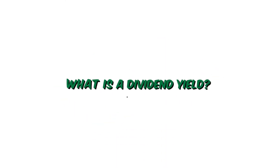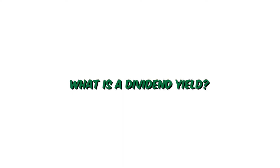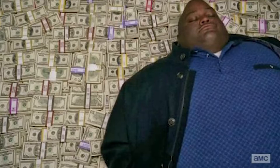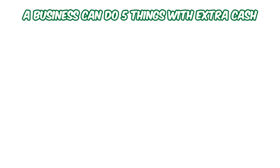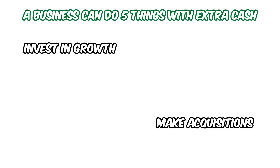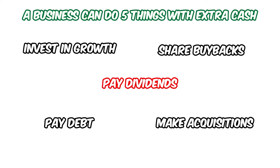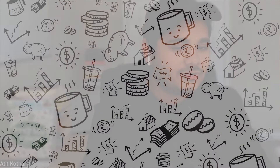Let's start by talking about what dividends are and what is a dividend yield. When a company has extra cash, they can do five things with it: invest in their growth, make acquisitions, buy back its own shares, pay out dividends, and pay down its debts. Dividends and share buybacks are devices to return the money back to its shareholders.